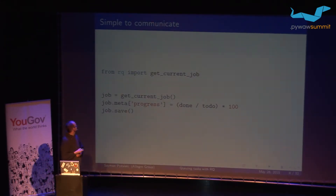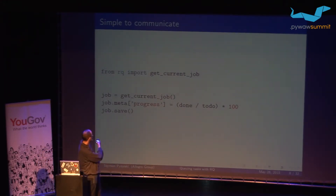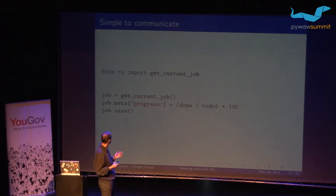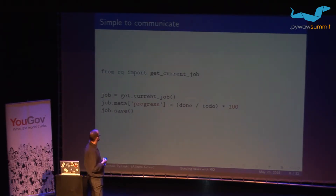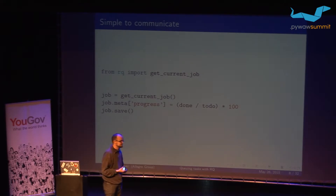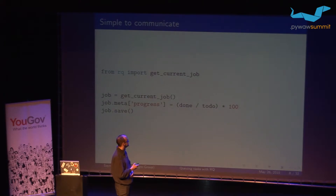Here we have a simple snippet. If you are inside the job, you can get the job object with a function and access the meta object — a dictionary-like structure where you can store arbitrary, picklable data. After you save this data, it goes to the Redis server and you can retrieve it from another process where you have the job ID.